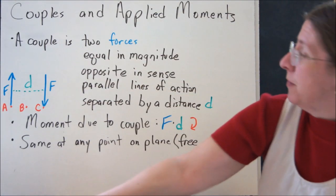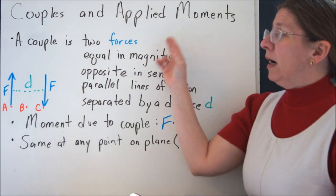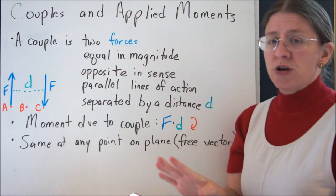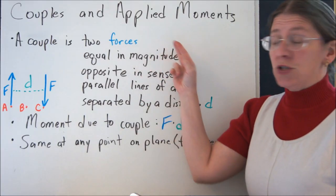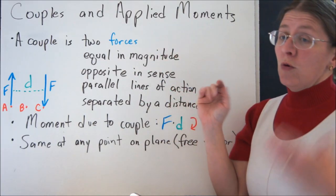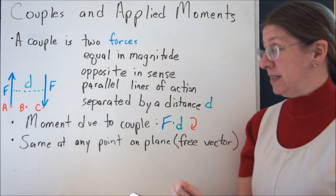So if we want to talk about couples, it's much easier to actually show you one than it is to tell you what it is. To define it, a couple is two forces equal in magnitude, opposite in direction, with parallel lines of action separated by distance.